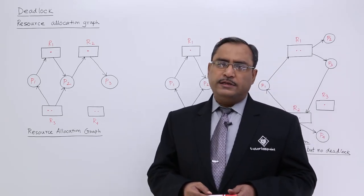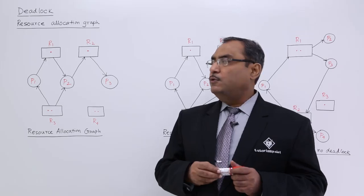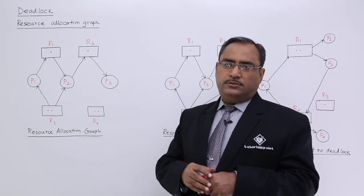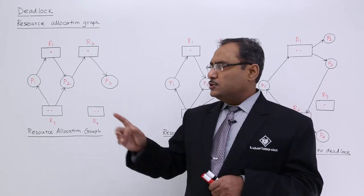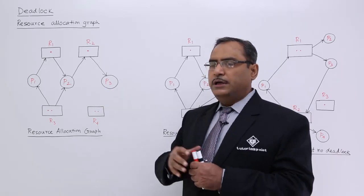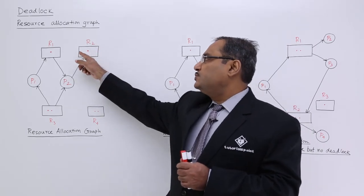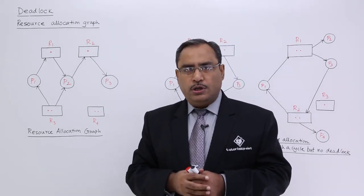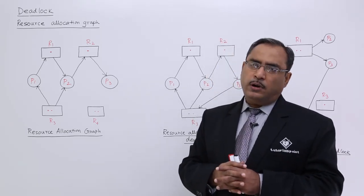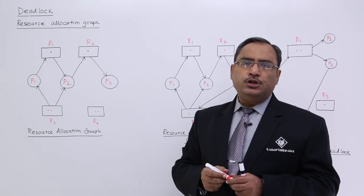A resource allocation graph mainly consists of four components, or four notations. First, circles denote the processes — here we have three circles: P1, P2, P3. Next, resources are shown in rectangular boxes. In this diagram there are four resources: R1, R2, R3, R4.